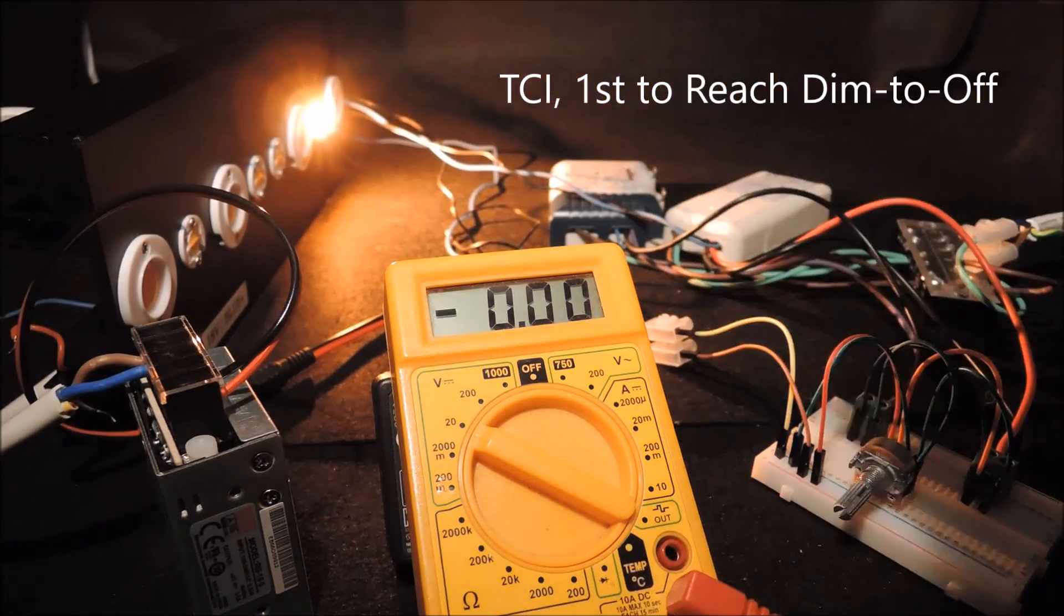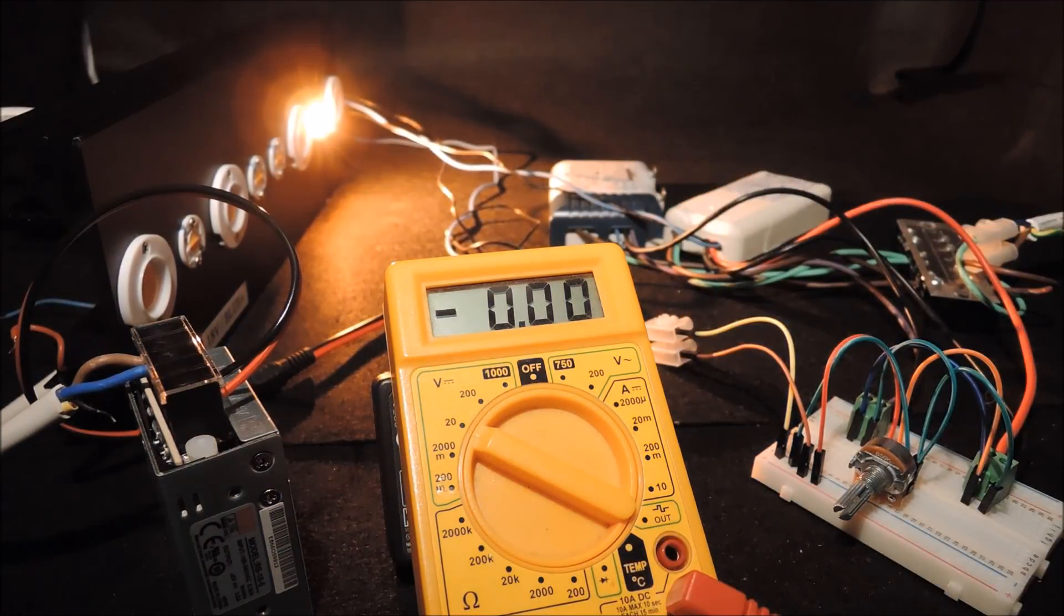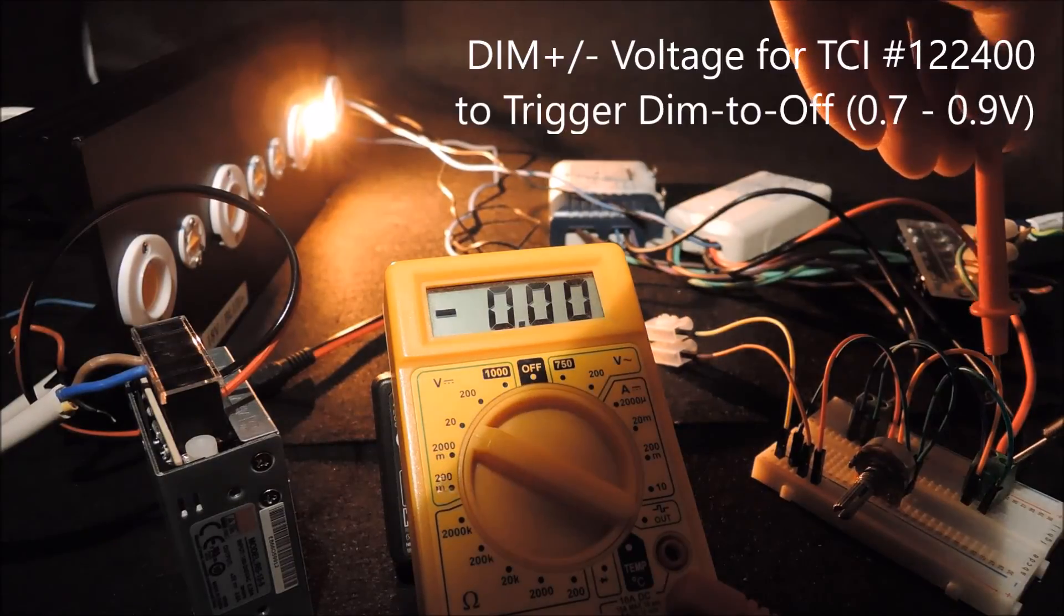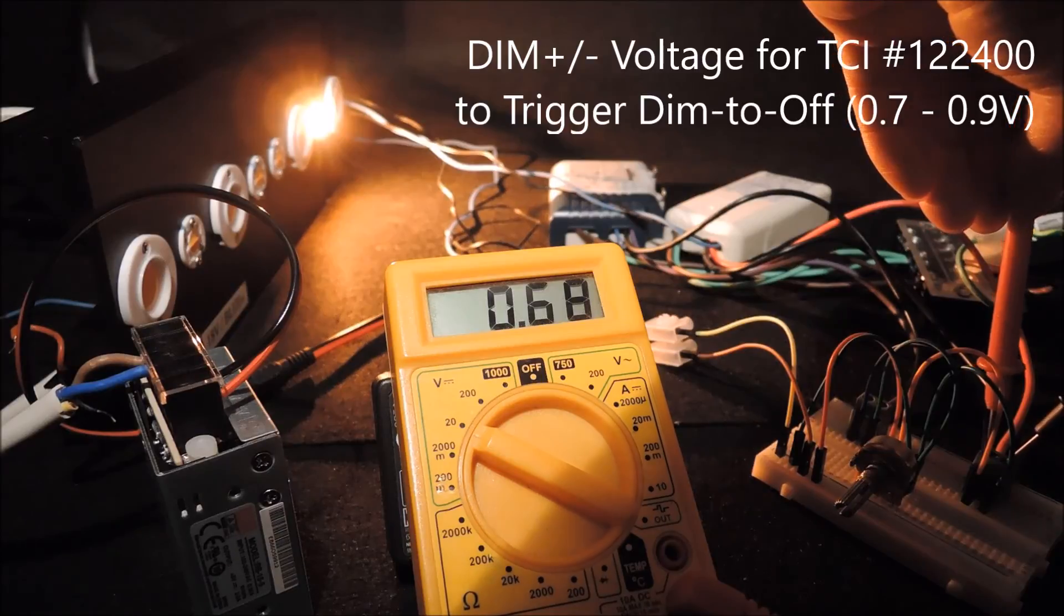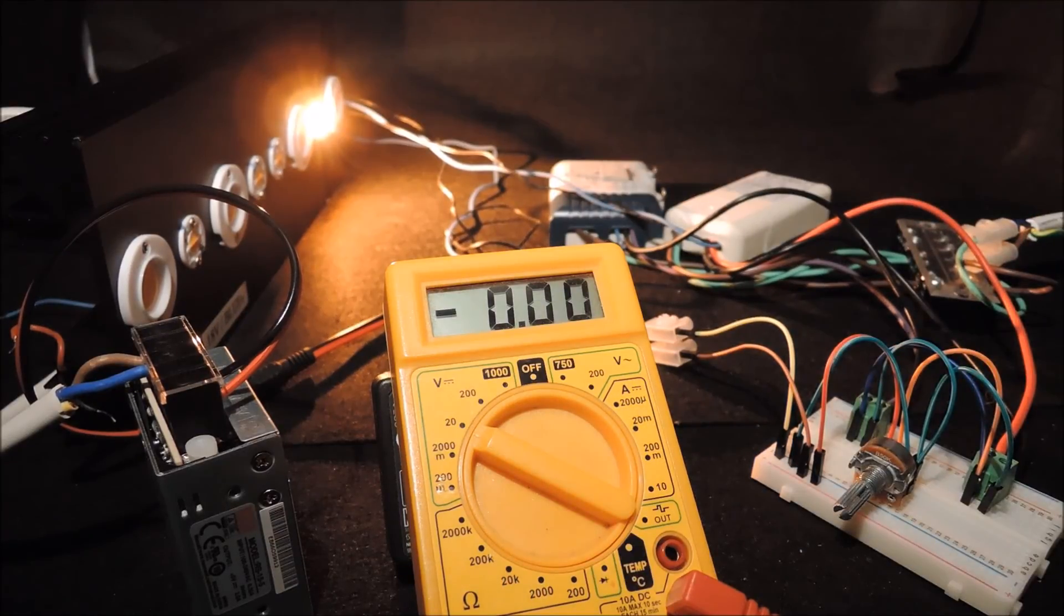As predicted, the TCI driver is the first to achieve dim to off and we can see the voltage that is going in is around 0.7V or 0.9V from an earlier measurement.